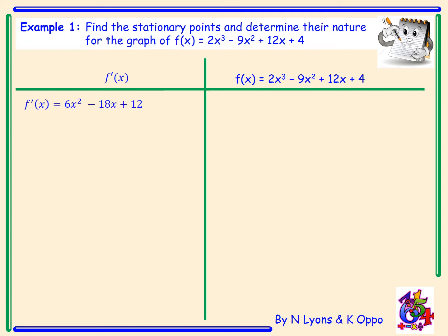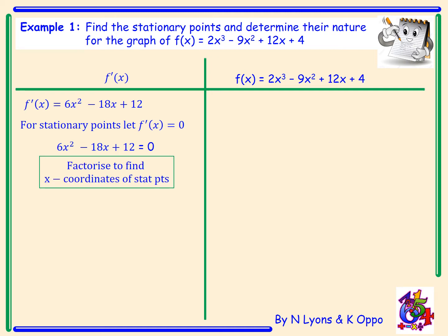f'(x) becomes 6x squared minus 18x plus 12. It is very important to write down in our working that we let f'(x) equal zero — if this is not done in the exam you could lose a mark. We set our derivative equal to zero and to find our x-coordinates of our stationary points we must now factorise.